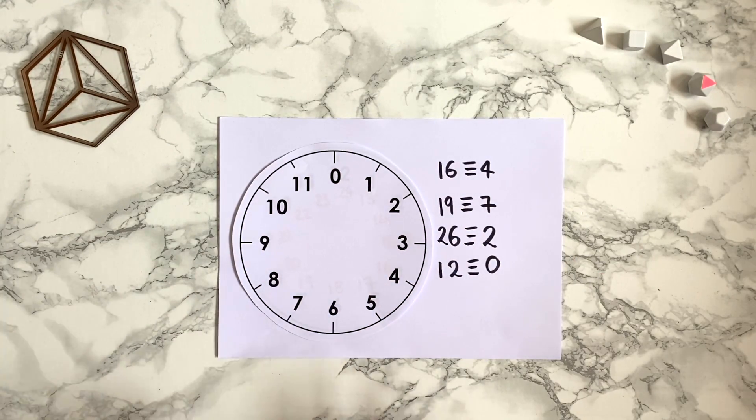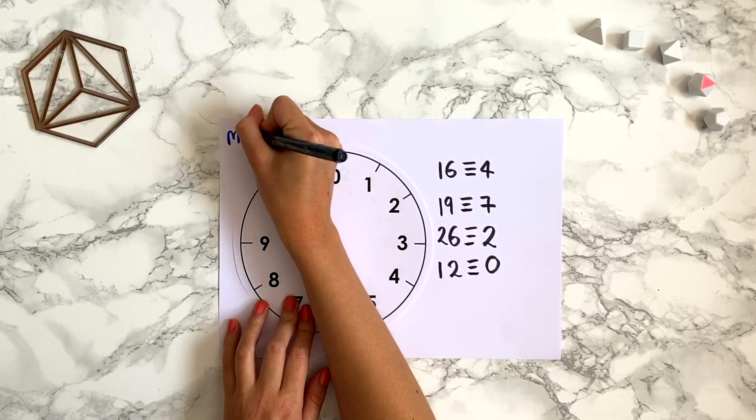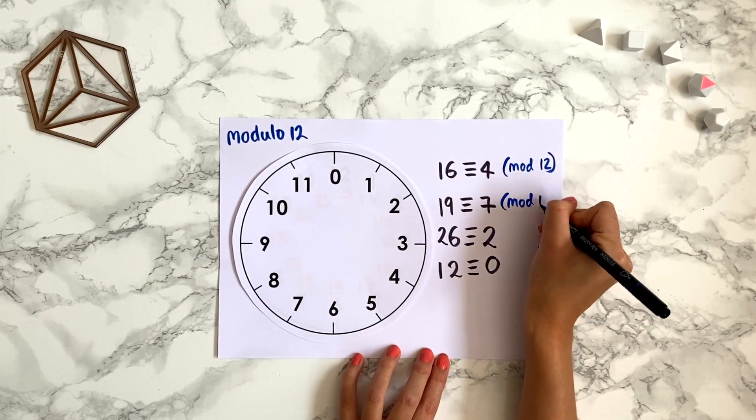Further, we want to be really clear that we're working with a clock face that has 12 hours on it. To do this we say that we're working modulo 12, and that all of these facts are true mod 12.